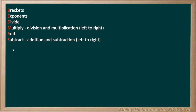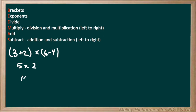Our next question is 3 plus 2, all in brackets, times 6 minus 4, all in brackets. We have to do our brackets first, so 3 plus 2 is 5, and 6 minus 4 is 2. Now we're just left with 5 times 2, which is 10.